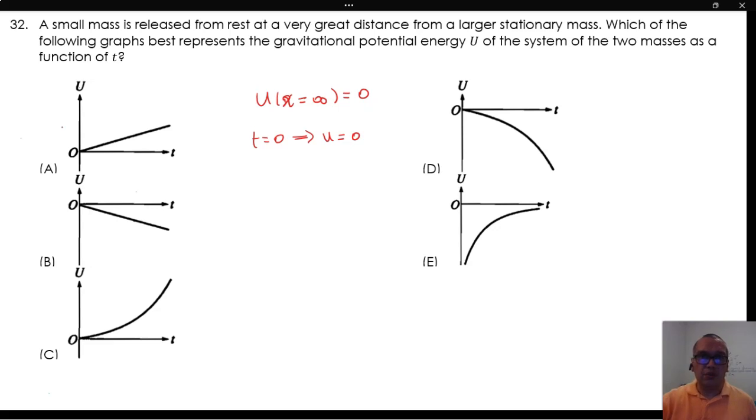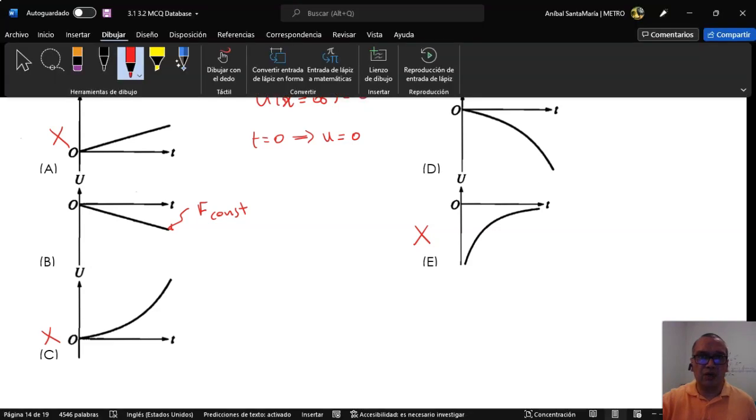Our two possible options are B and D. However, option B indicates a constant force, which is not the case for gravity. This means our only option is D.